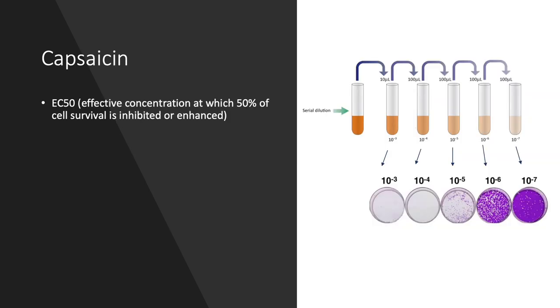Our compound of interest for today and for future assays will be capsaicin. The question is whether capsaicin causes cell death and at what concentration it kills 50% of the cells. This is also known as the EC50.